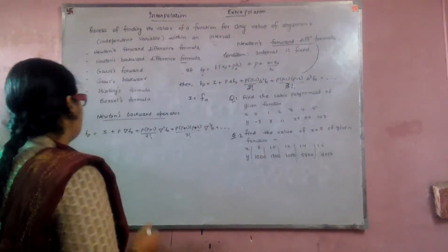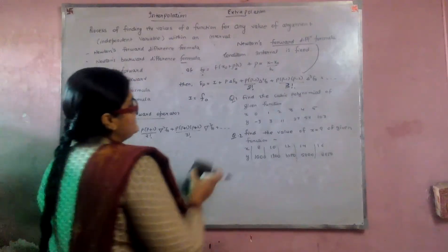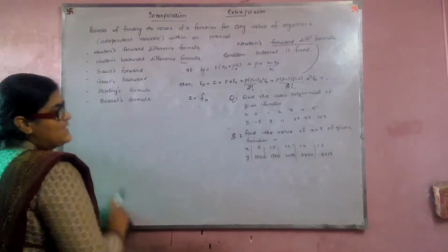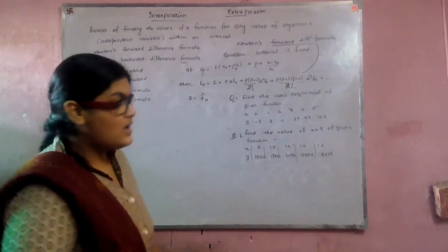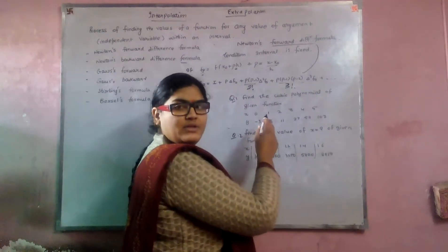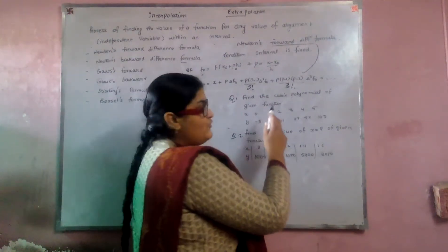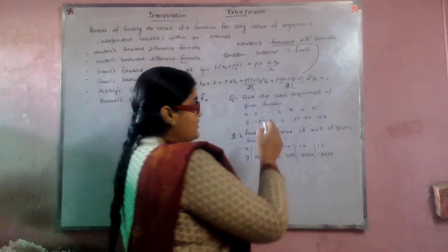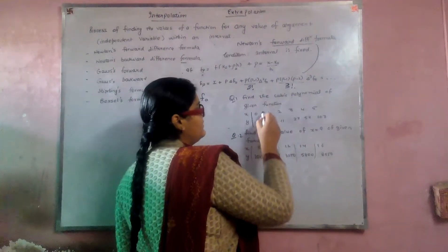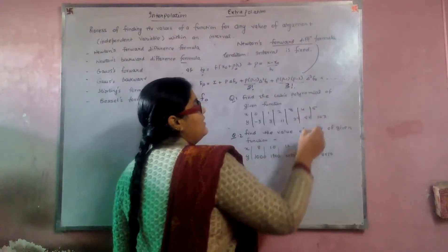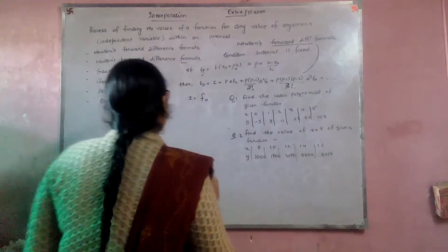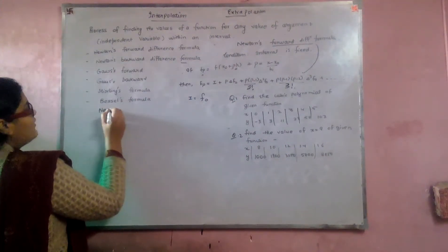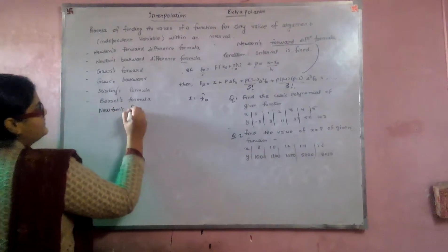Now let us understand this topic with some examples. In this first question, we have to find the cubic polynomial of the given function. To do this, you have to form Newton's forward difference operator table.